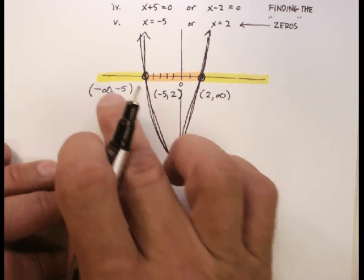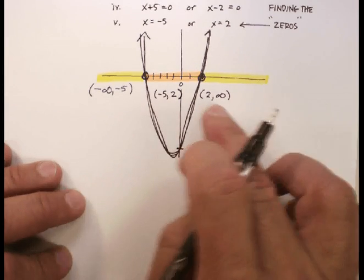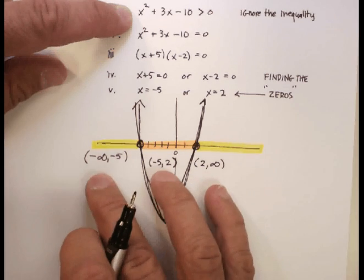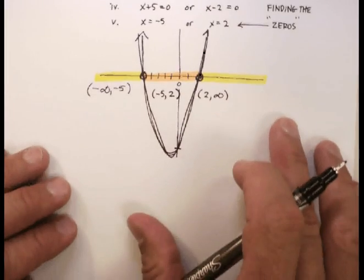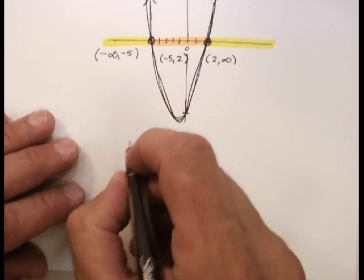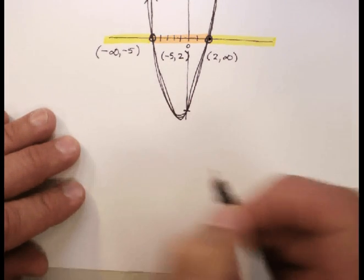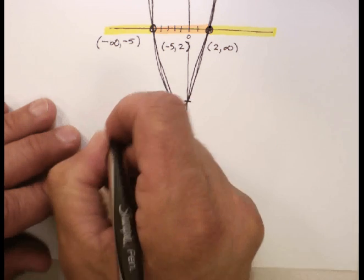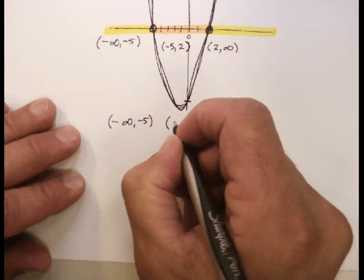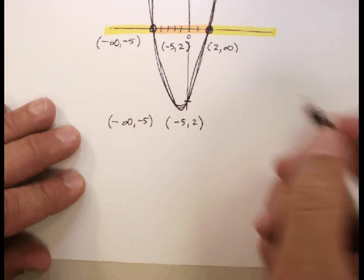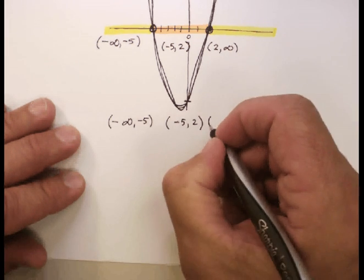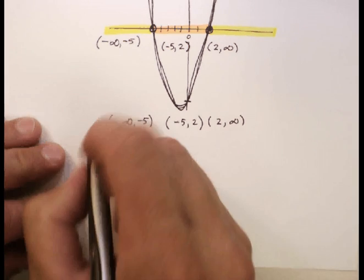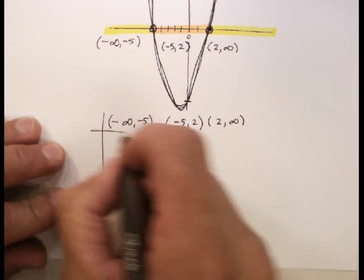What you want to do to solve these is you want to choose a test point out of each one of these. Put them through the equation and see if it works. And whatever which ones work is your answer. But I'm going to show you a faster way. And this is using what's called a sign chart. So let's rewrite these three regions again. Negative infinity, negative 5, parentheses around each. Negative 5 to positive 2, parentheses around each. And positive 2 to positive infinity. Again, parentheses around each. And I want you to create this little chart like this.